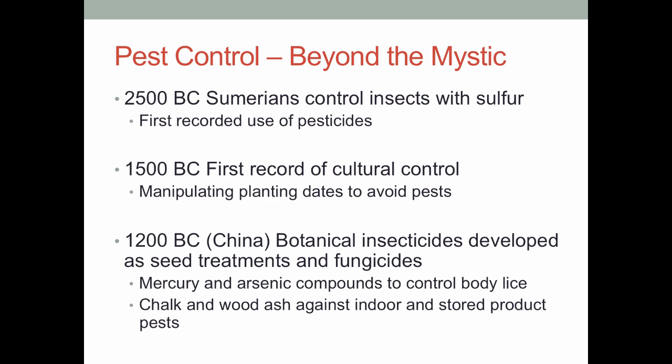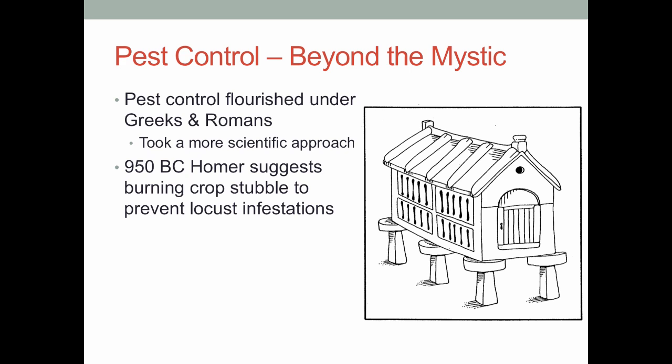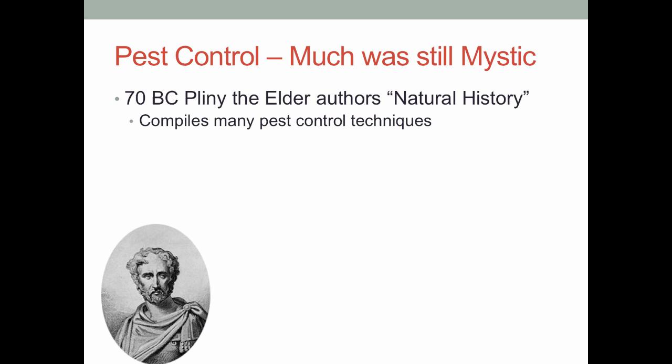As we progressed into the Greek and Roman era, we saw a whole lot of discoveries being made very quickly. The Greeks and Romans put a lot of stock — not just in the gods — but also in a more scientific way of thinking, using evidence and testing to see what worked and spreading that information. We see things like Homer in 950 BC suggesting you could burn crops to prevent locusts, fumigants being used in 350 BC, and in 13 BC Marcus Polio designed a granary that was supposedly rat-, weevil-, and fireproof. He made the whole thing out of stone and put it on pedestals that are thin at the bottom and fat at the top, so rats crawling up would bump their heads and fall back down. I don't think there's any evidence anyone actually built a granary like this, but people were clearly thinking about pest problems and trying to come up with practical solutions.